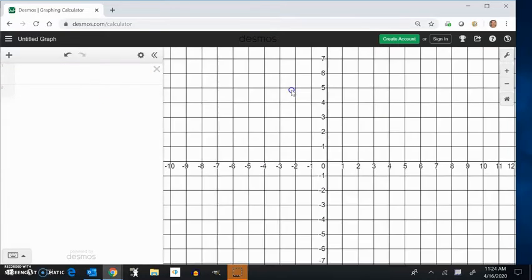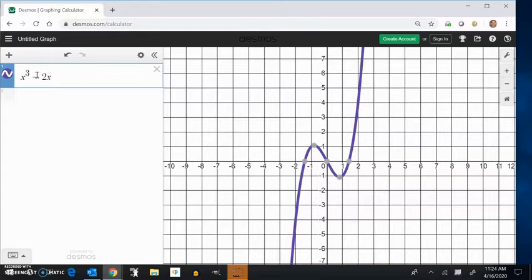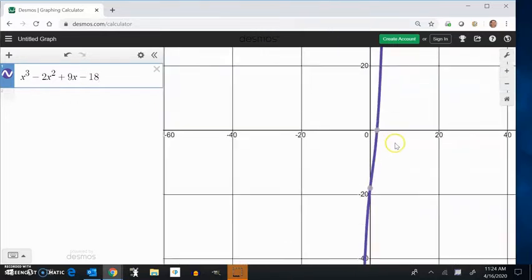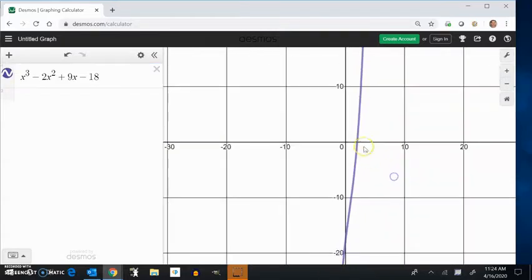What if I had something that looks like this, minus x cubed, minus 2x squared, plus 9x, minus 18. So if you look at that, wow, it's this weird, ugly, it's still cubic, but it only has that zero there that shows up.